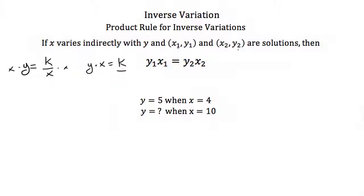For example, if we have the point (4,5), then 5 times 4 gives k equals 20. If we know x equals 10 for another point but don't know y, and we know k equals 20, we can solve for y.